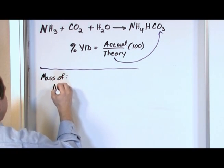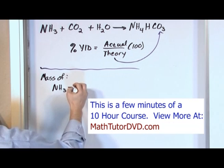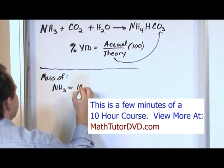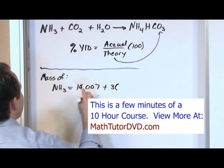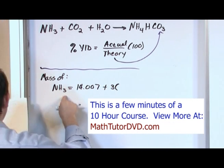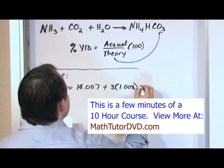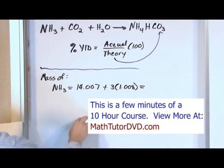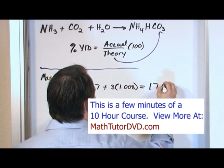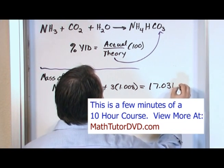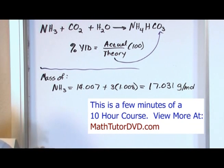Let's find the molar mass of NH3. Nitrogen is 14.007, plus 3 times hydrogen at 1.008. If you multiply and add, you get 17.031 grams per mole for NH3.